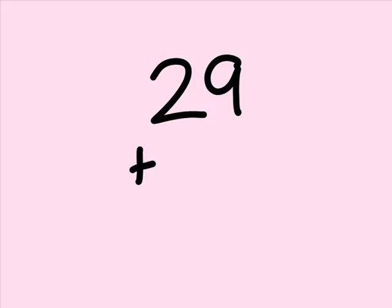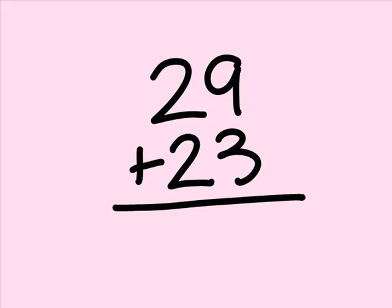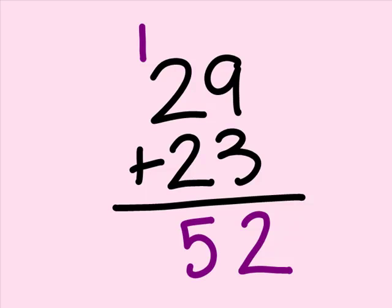Now, let's do a more difficult problem that involves carrying. 29 plus 23. As always, we have to add the right-most digits first, which are the 9 and the 3. 9 plus 3 is 12, so we put the 2 in the answer and the 1 above the row to the left. 2 plus 2 is 4, plus 1 is 5. 29 plus 23 is 52.